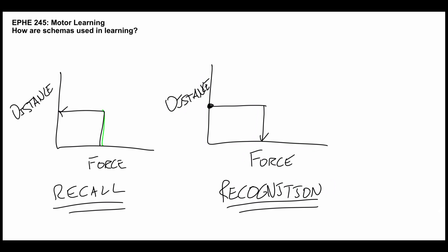The recall schema goes, alright, that's what we're gonna do. And after the movement, the recognition schema says, that's what happened. And then this is compared and that provides a basis for learning.